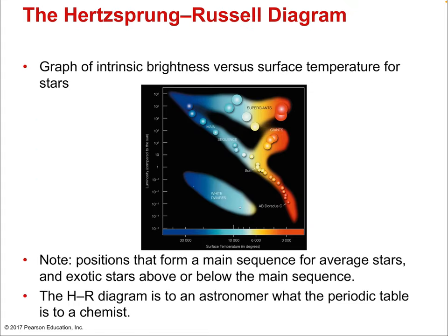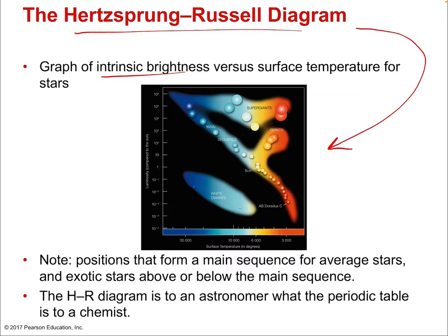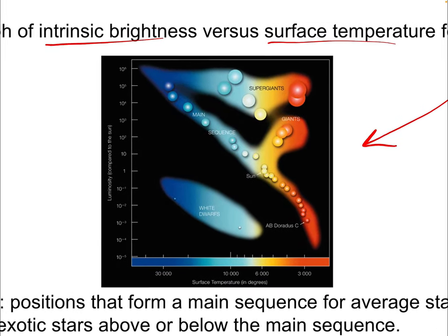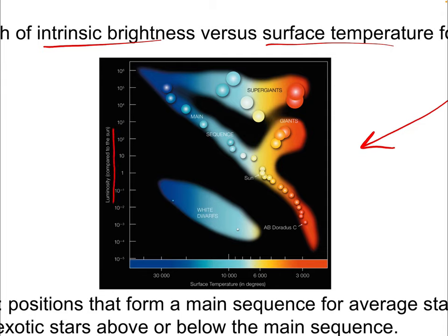Here is the periodic table of astronomy — the Hertzsprung-Russell diagram. It's a graph of intrinsic brightness versus surface temperature. Notice the axes: luminosity compared to the sun on the vertical axis, and surface temperature on the horizontal axis — which unusually increases as you move to the left. Our sun sits at just under 6,000 degrees Celsius with a luminosity of 1 compared to the sun.